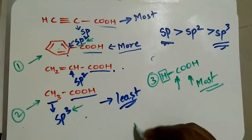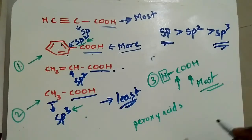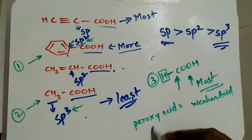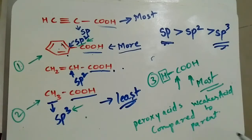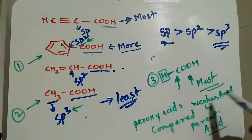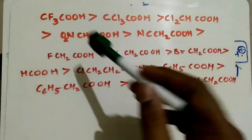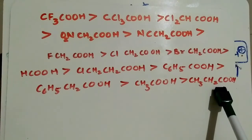Also remember that peroxy acids are weaker acids compared to their corresponding parent carboxylic acids. So when comparing a peroxy acid to its parent acid, the peroxy acid is the less acidic one.